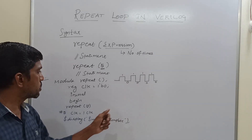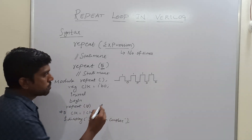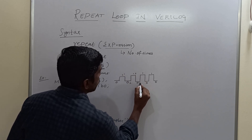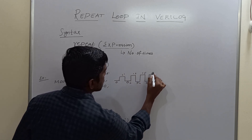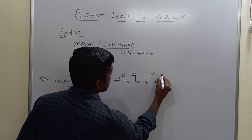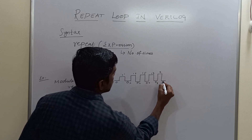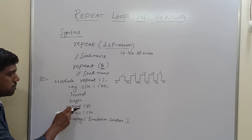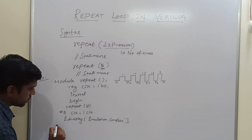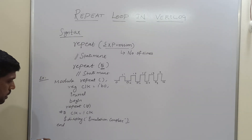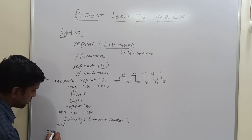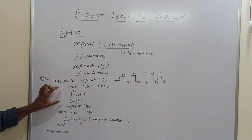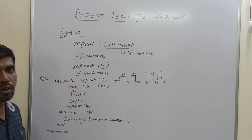So this sequence goes up to 10: 0, 1, 2, 3, 4, 5, 6, 7, 8, 9 — then on the 10th iteration, since the repeat value equals 10, at that time this loop will exit. Here end the loop, then end module. This is the simple repeat loop program for generating the clock frequency.